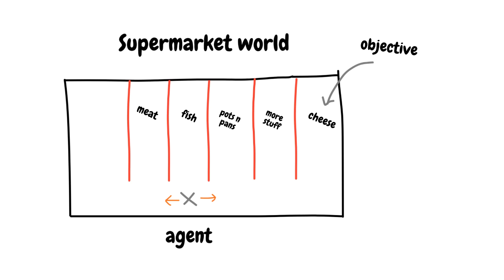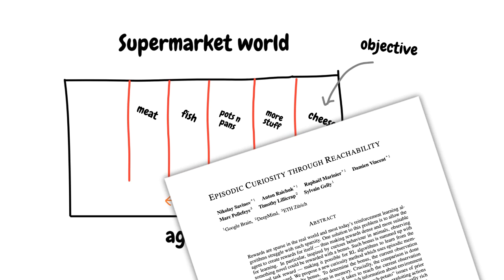On October 24th, Google dropped a blog post and paper on how we can make an agent explore using curiosity. The idea is to have an additional reward type. Besides the reward for getting closer to an objective, the agent should also be rewarded for discovering new parts of the world.